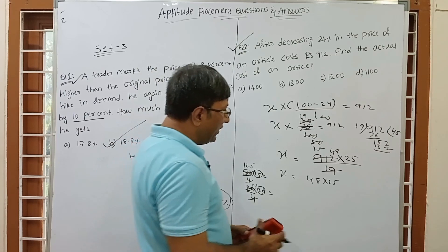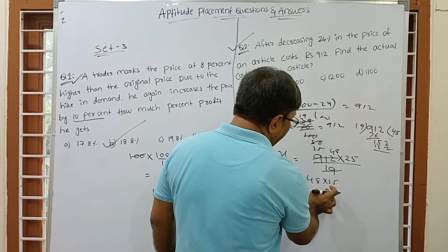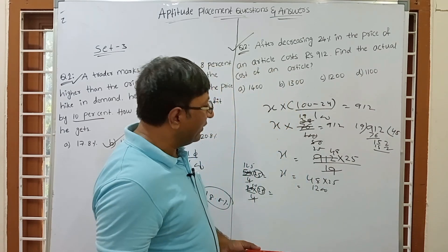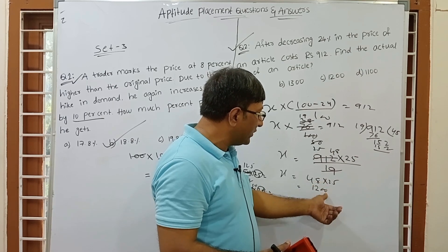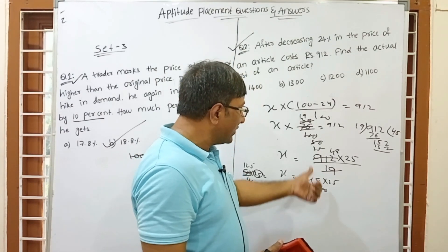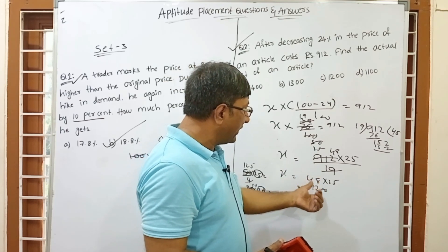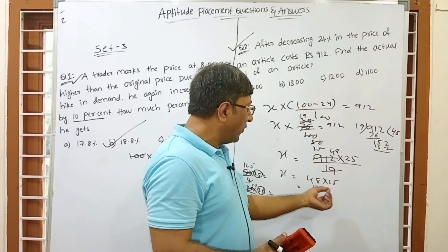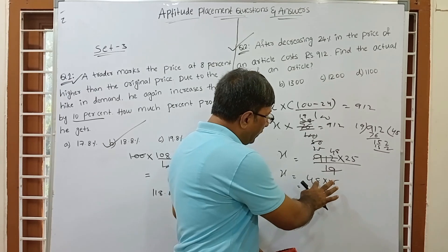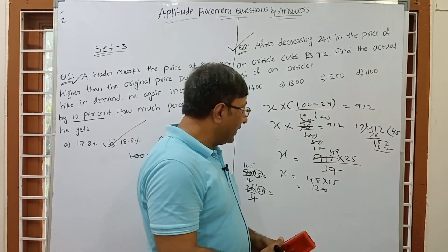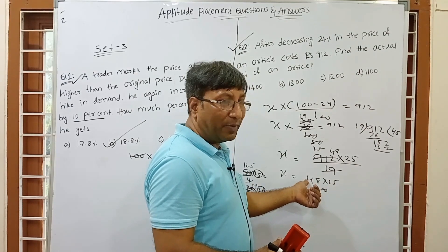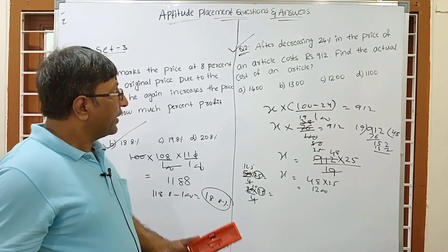Using this trick for 48 × 25: write 4800 and divide by 4. 4800 ÷ 4 = 1200. You can verify: 25 × 48 = 25 × 8 = 200, carry 20; 25 × 4 = 100 + 20 = 120, giving 1200. So this trick — append 00 then divide by 4 — works for any large number multiplied by 25.